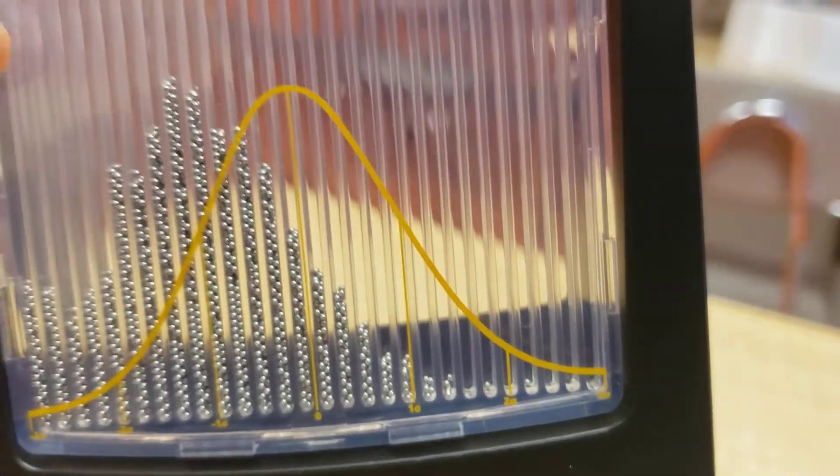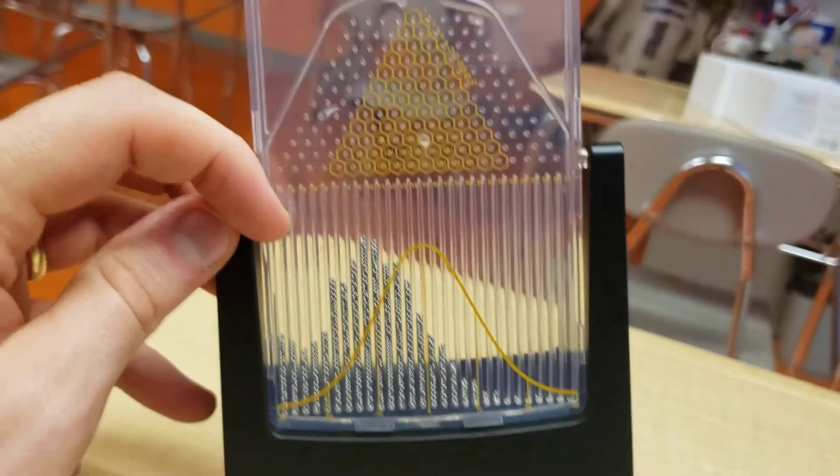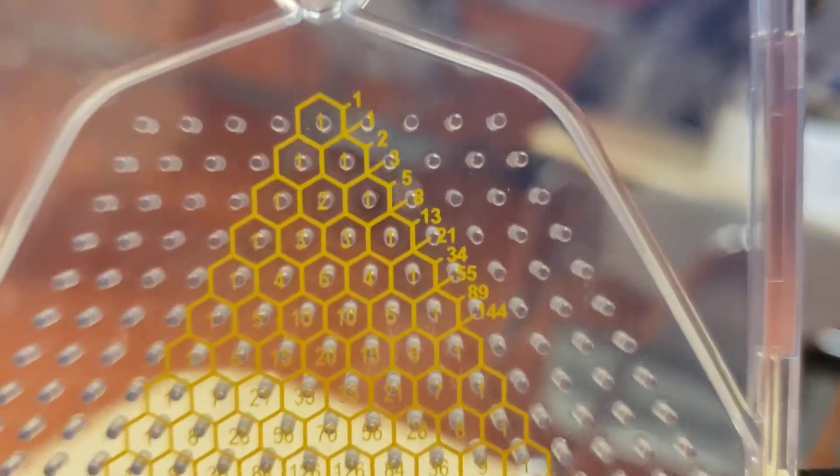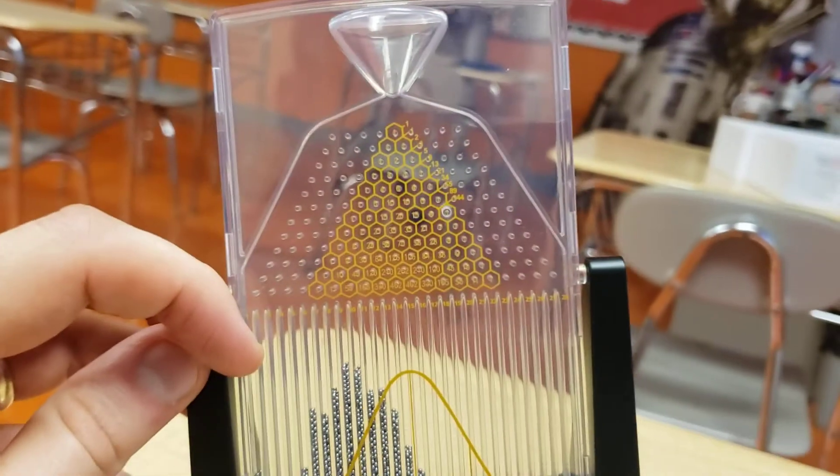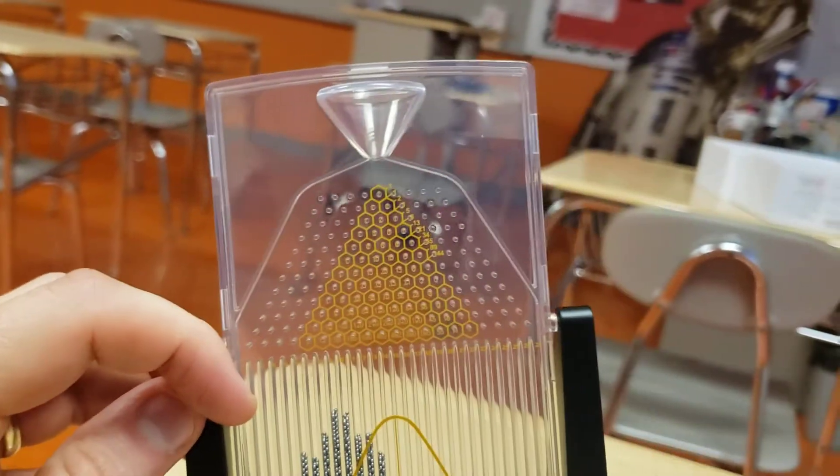Now, what happened here is that we have a skewed right distribution. It is still binomial. It's binary, right? Because they still have to make the choices on these pegs up here. Do I go left or do I go right? Well, they're more influenced to go to the left. That means their probability is higher to go to the left, right?